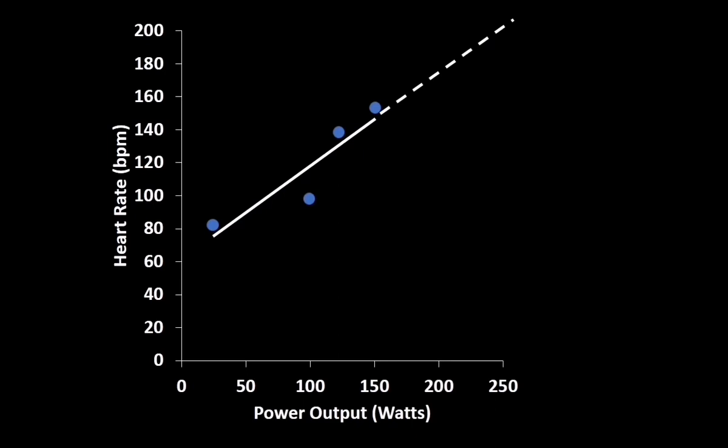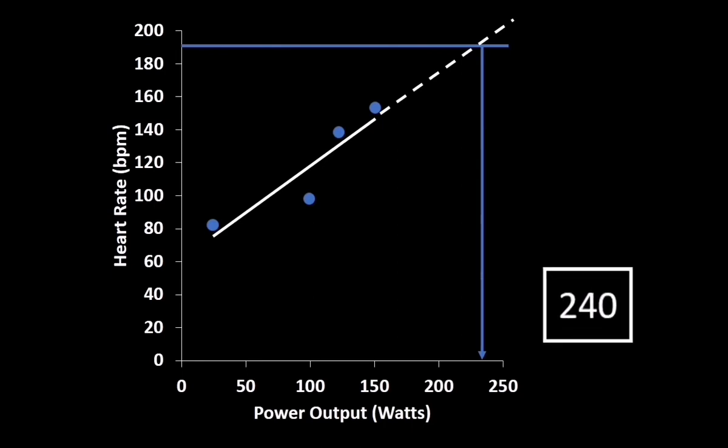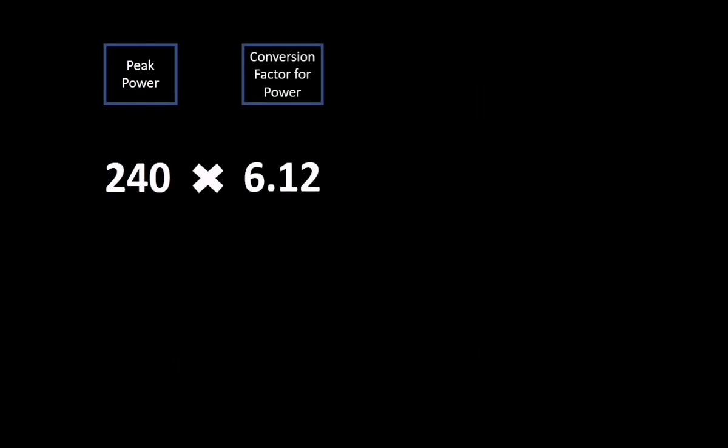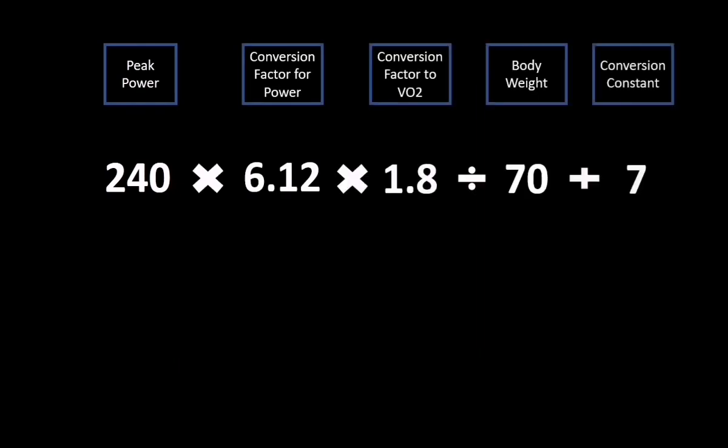When extrapolating the line of best fit up to her predicted heart rate max of 191, we can estimate her peak watts to be around 240, which we can then convert to a predicted relative VO2 max of 45 milliliters per kilogram per minute.